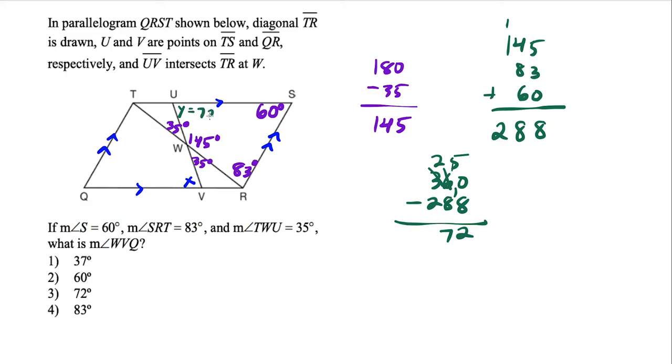So this is a 72 degree angle. But notice what we have here, this 72 degree angle is alternate interior to this angle over here. Notice that Z shape because we have a parallelogram. So this missing angle here, WVQ is going to be equal to 72 degrees.